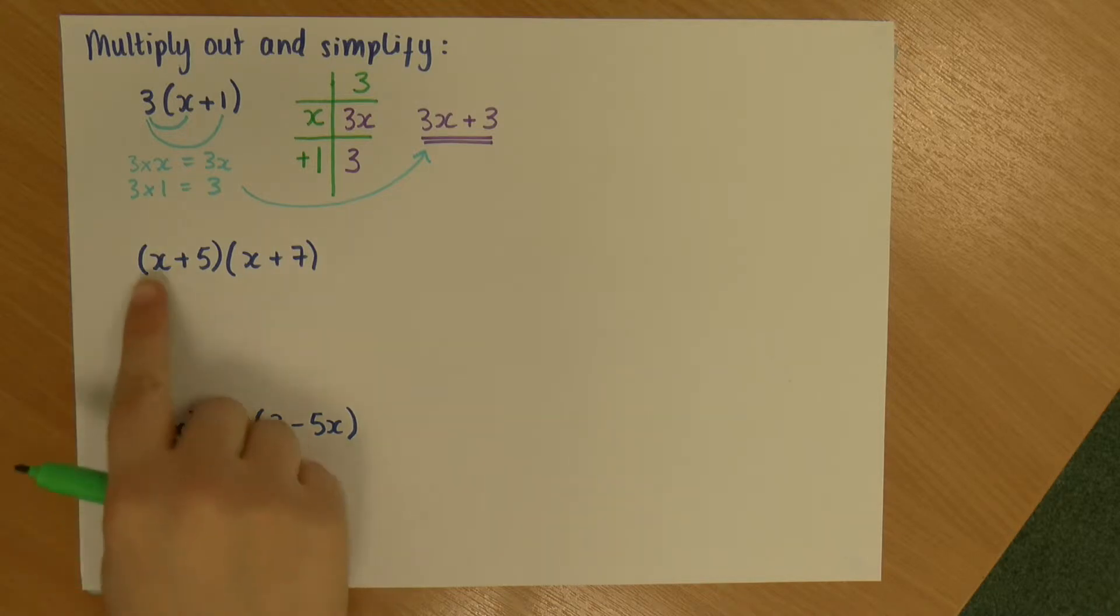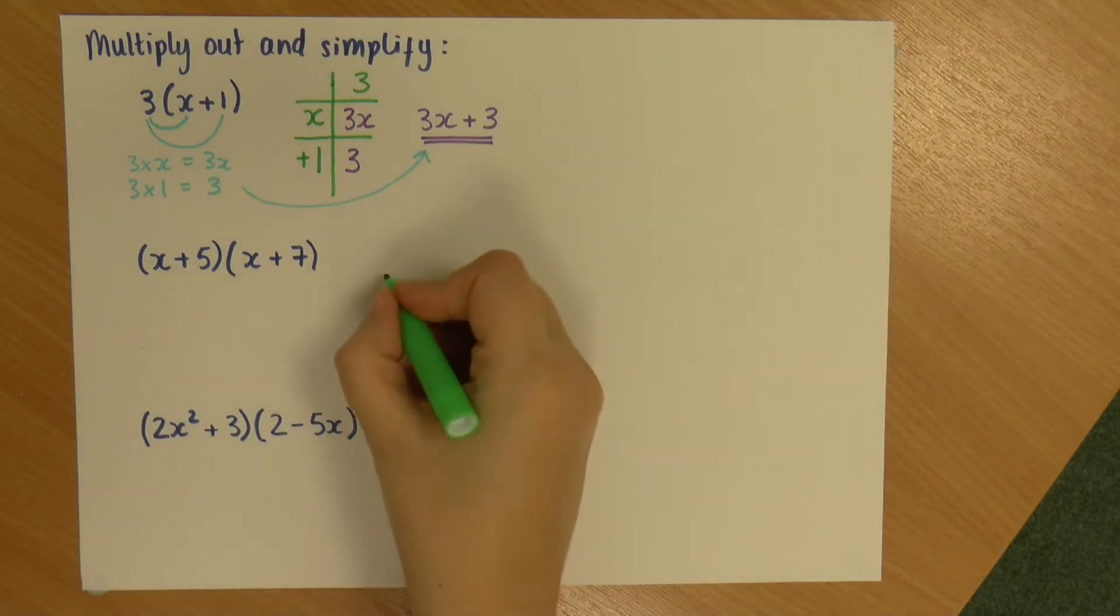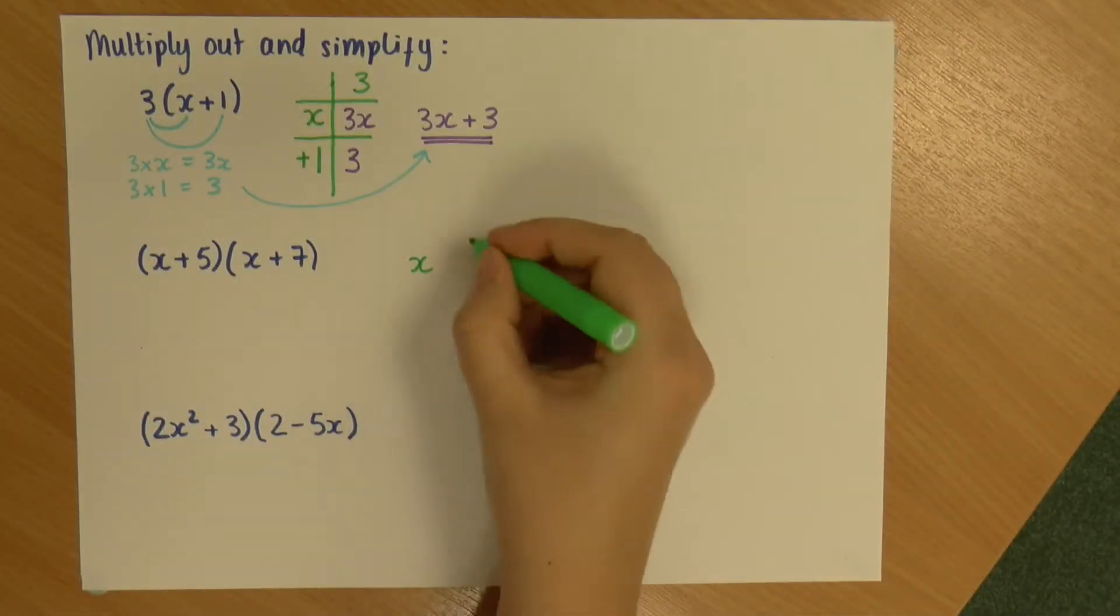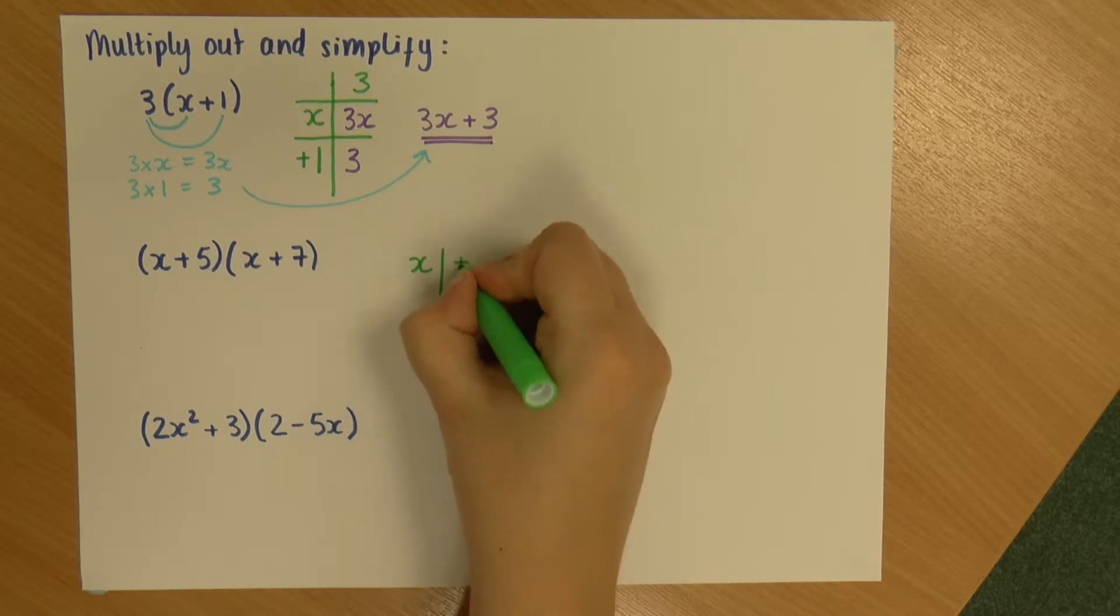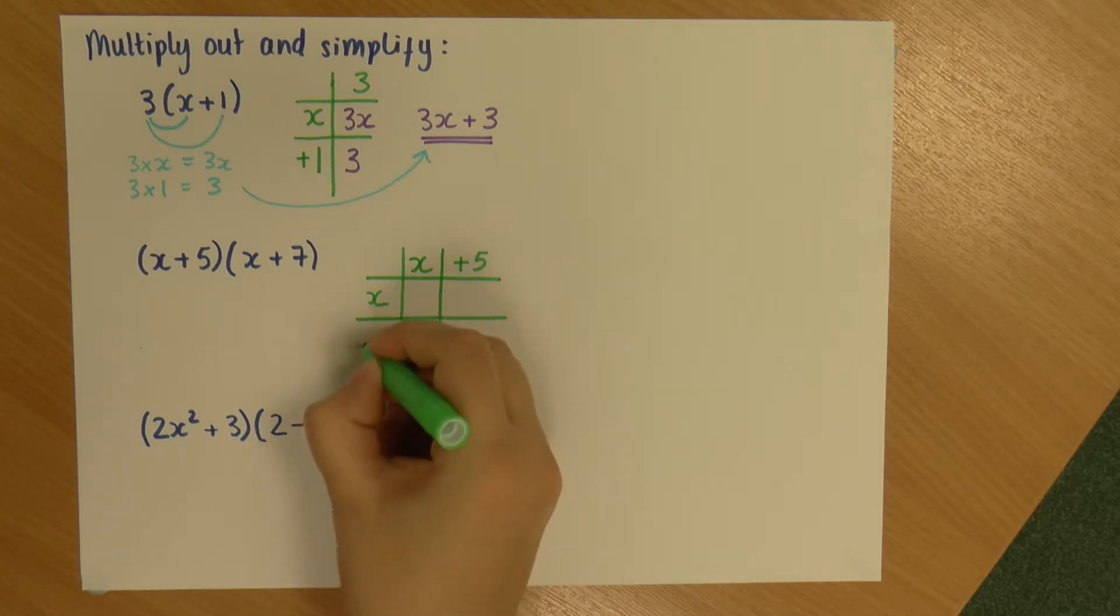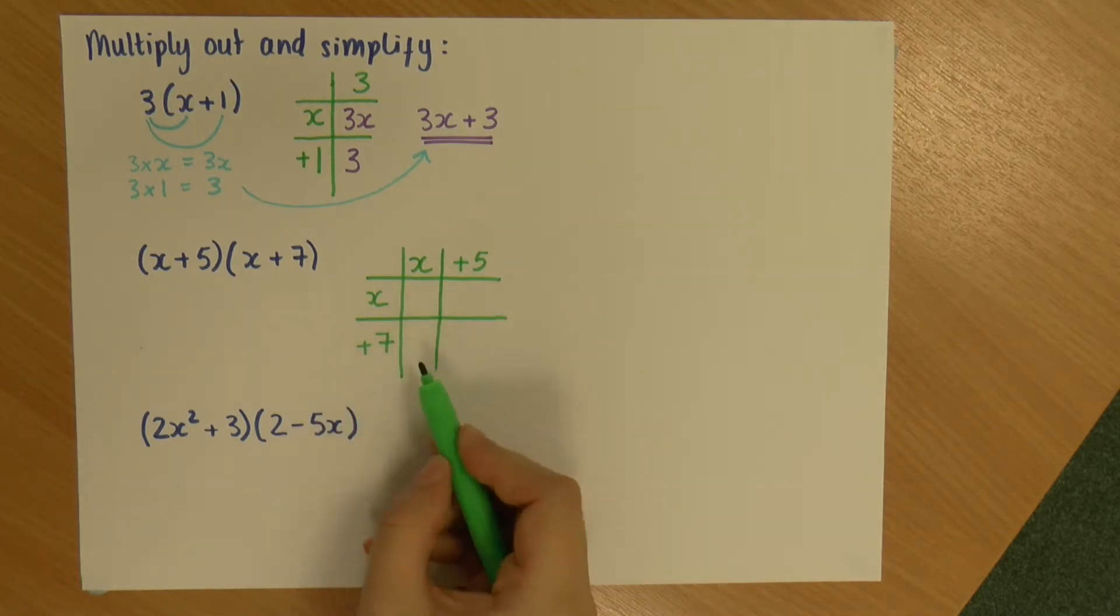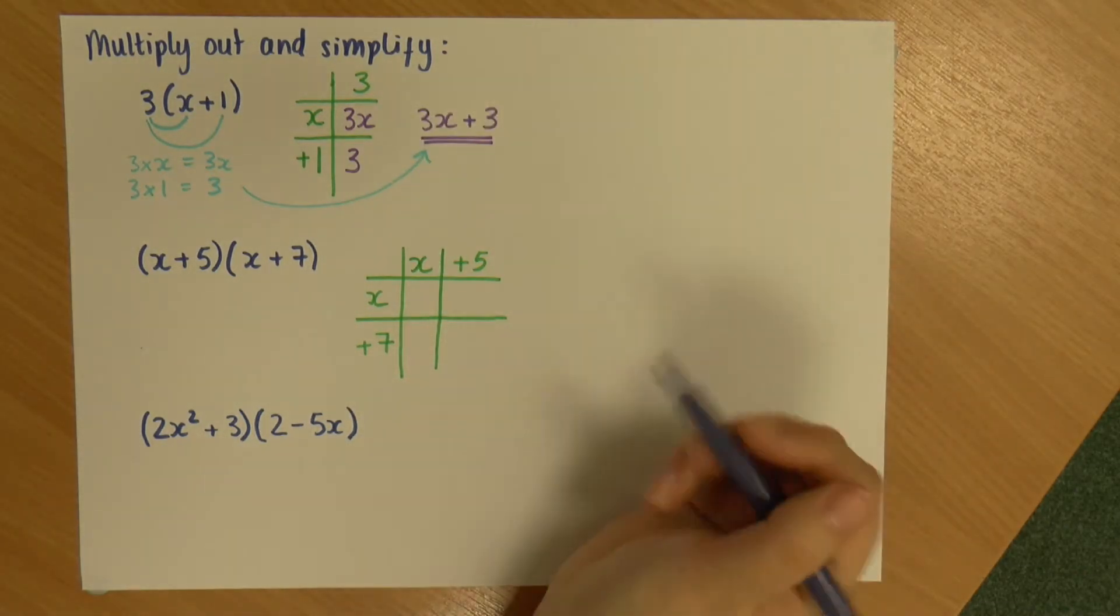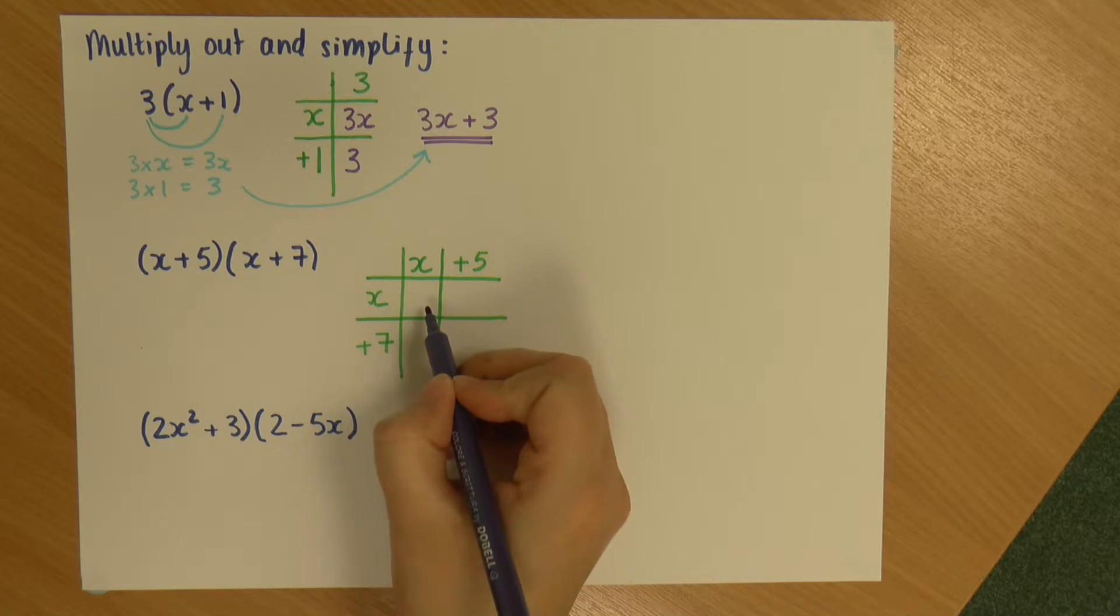Okay. So, let's have a look at this next one. So, this time we've got two sets of brackets. So, I'm going to do the box method again first. So, this time I'm going to put one along the top and one along the side. So, I'm going to do x plus 5 along the top. And then along the side, I'm going to do my x plus 7. So, you can see how I've split these up. The x is by themselves and then the numbers by themselves.